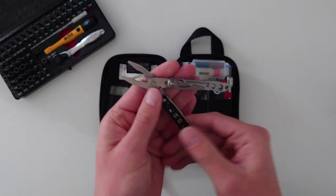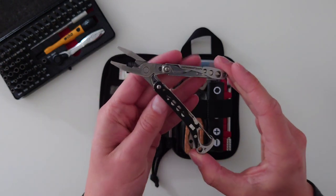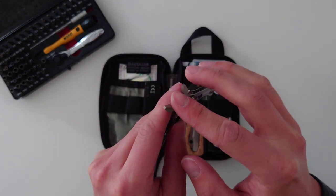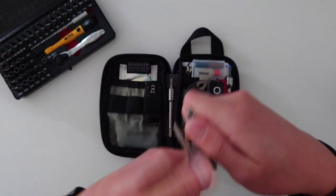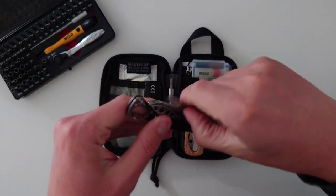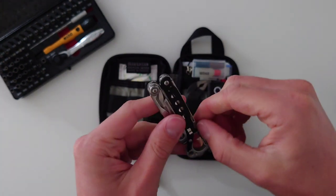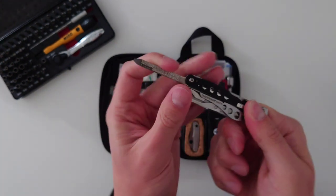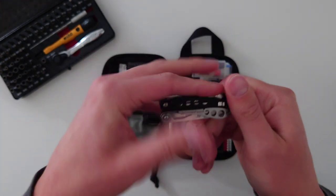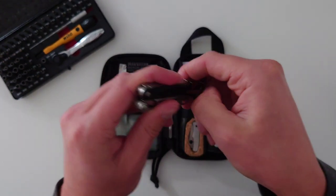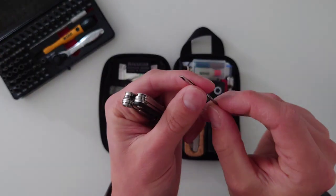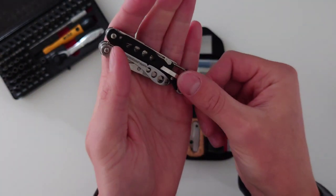The next thing I've got is the Leatherman Style PS, which is a really good quality multi-tool. It's got the needle nose pliers, it's got a pair of scissors, it's got a nail file, and it's also got a really high quality set of tweezers which just sit inside the face plate.